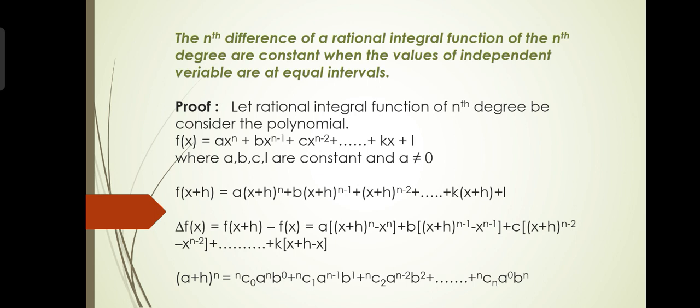Now by using the binomial theorem: (a+b)^n = C(n,0)·a^n + C(n,1)·a^(n-1)·b + C(n,2)·a^(n-2)·b^2 + ... + C(n,n)·b^n. We apply the binomial theorem in Δf(x).